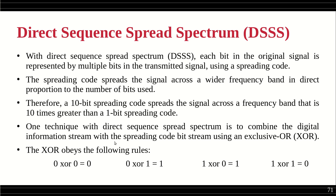One important property of XOR: if one of the inputs is 0, it acts as an identity — whatever the other input is, that will come as the output. If the second input is 1, then the complement of the other input comes as the output. So if one input is 0, the other passes through unchanged; if one input is 1, the other input is inverted.